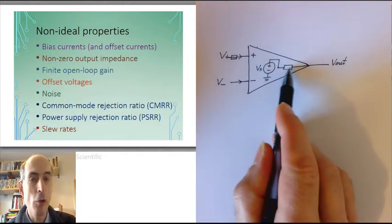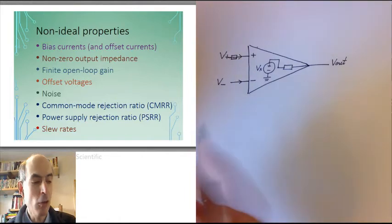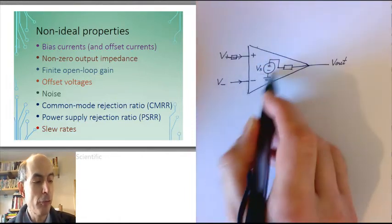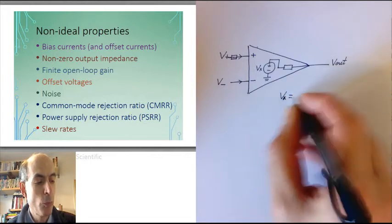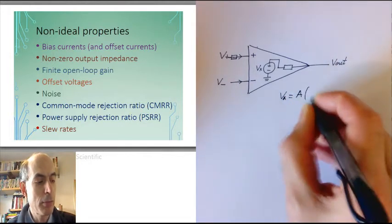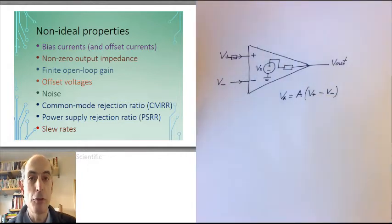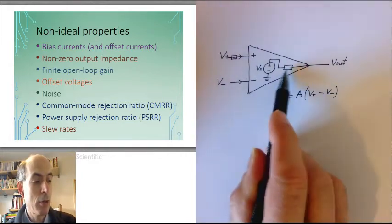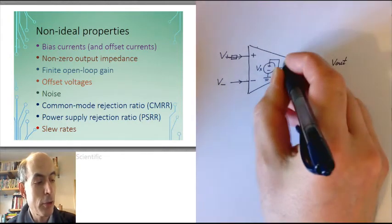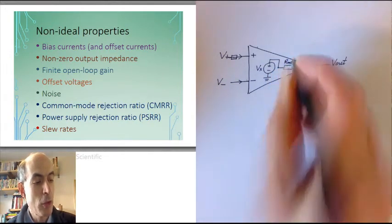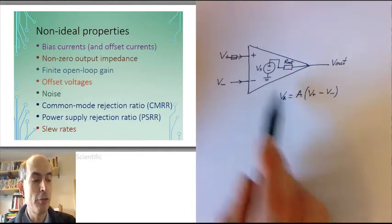They also have a non-zero output impedance. So, in a typical ideal op-amp, this internal voltage here, Vx as I've called it in the diagram, would be the open loop gain times the difference between the voltages on the two input pins. And with an ideal op-amp, this resistor here, I'll call it Rout, the output resistor, would be zero, which means that Vout would be equal to Vx.